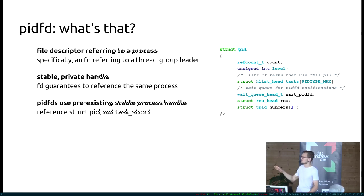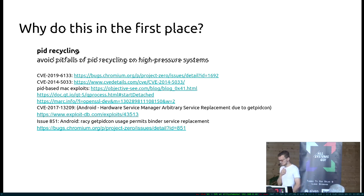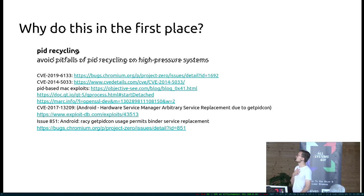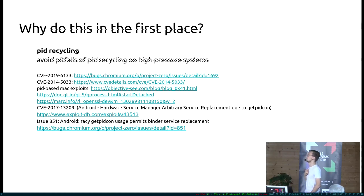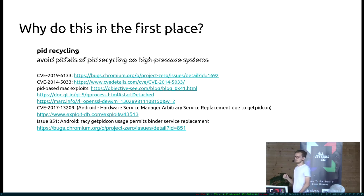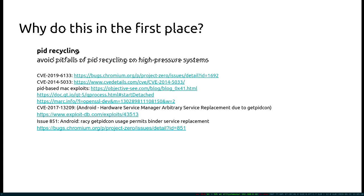Why do this in the first place? We actually had a bunch of use cases. The first one that is pretty obvious is PID recycling — avoiding the pitfalls of PID recycling on high-pressure systems. PID number allocation in the kernel works cyclically: the kernel ramps up the PID number until it hits the maximum, then wraps around and takes the next free PID number. So you can end up in a situation where a process's PID has been recycled while you're still operating under the assumption that it's the prior process.